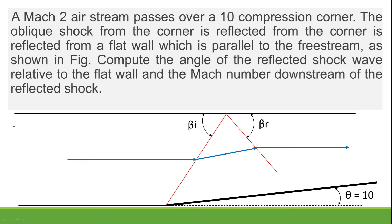First, what are the given data? M1 is given which is 2 in the upstream and theta value is 10 degrees. What we have to find out here is that due to this reflection it created 3 zones: 1, 2, and 3. It's forming a new shock angle and we need to find out the Mach number and the angle of reflected shock wave relative to the flat plate.